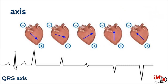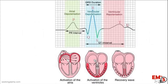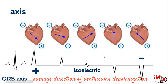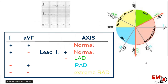Next, we're going to look at the axis — specifically the QRS axis, which represents the average direction of ventricular depolarization. On the EKG, we're looking for positive waves (upward) and negative waves (downward). We're going to look at two leads to determine the axis: lead 1 and lead AVF, then plot it on the circle.